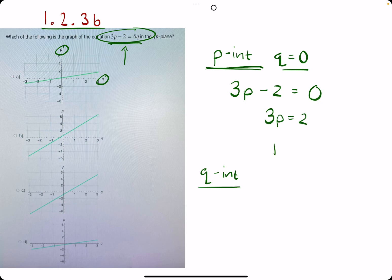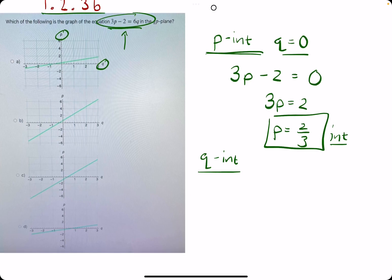We add 2 and divide by 3. We get p equals 2/3. This is our p-intercept, so we should look for the correct green line that's intersecting the p-axis through 2/3, or the y-axis through 2/3.